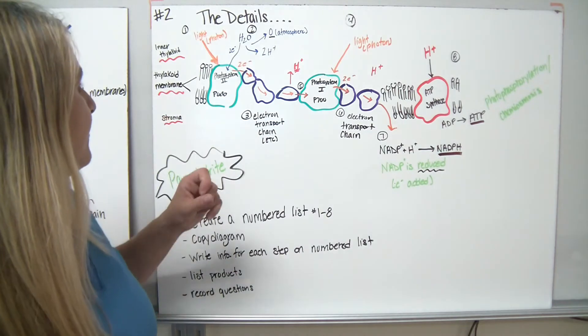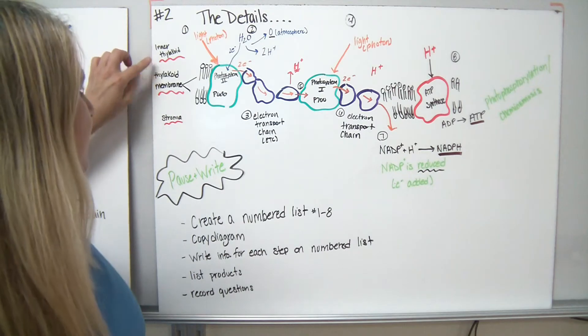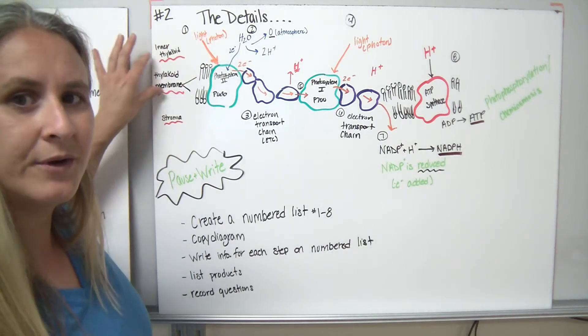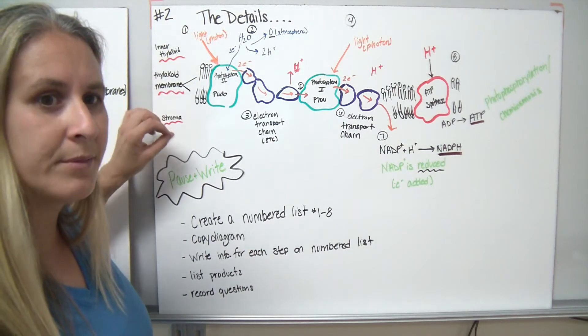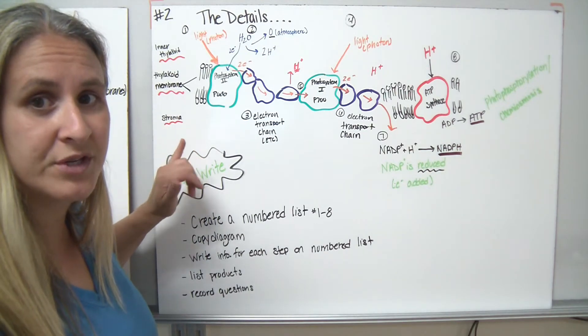So as we go through this, we're inside our chloroplast. We have the inner thylakoid membrane here. This is the thylakoid membrane. It's kind of set up like a cell membrane is. And then on this side, we have the stroma, which remember is the liquid portion of our chloroplast.